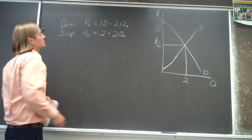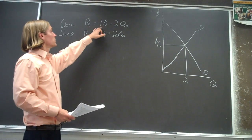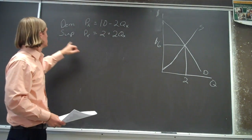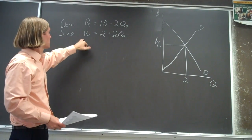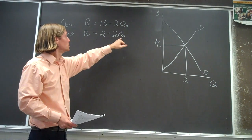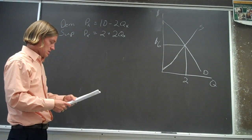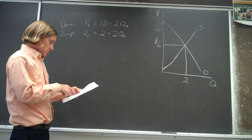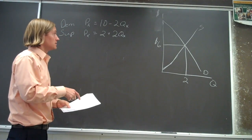Alright, so we've got a demand equation where the price of x is equal to 10 minus 2q, and a supply equation where the price of x is equal to 2 plus 2q.